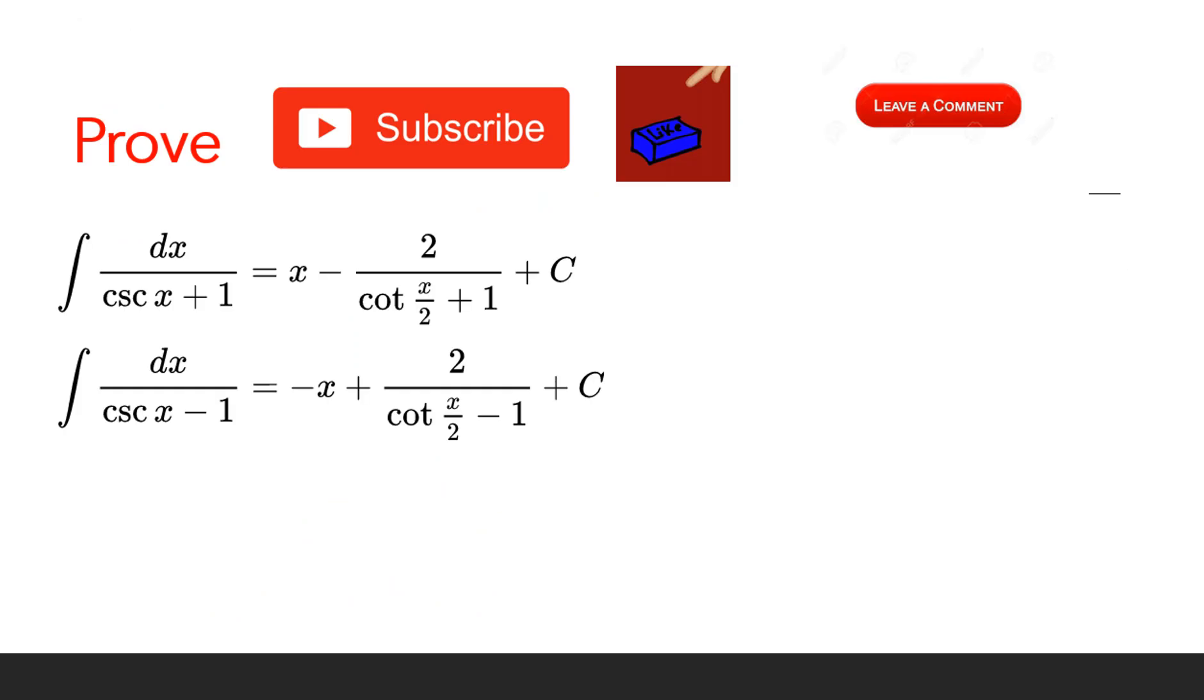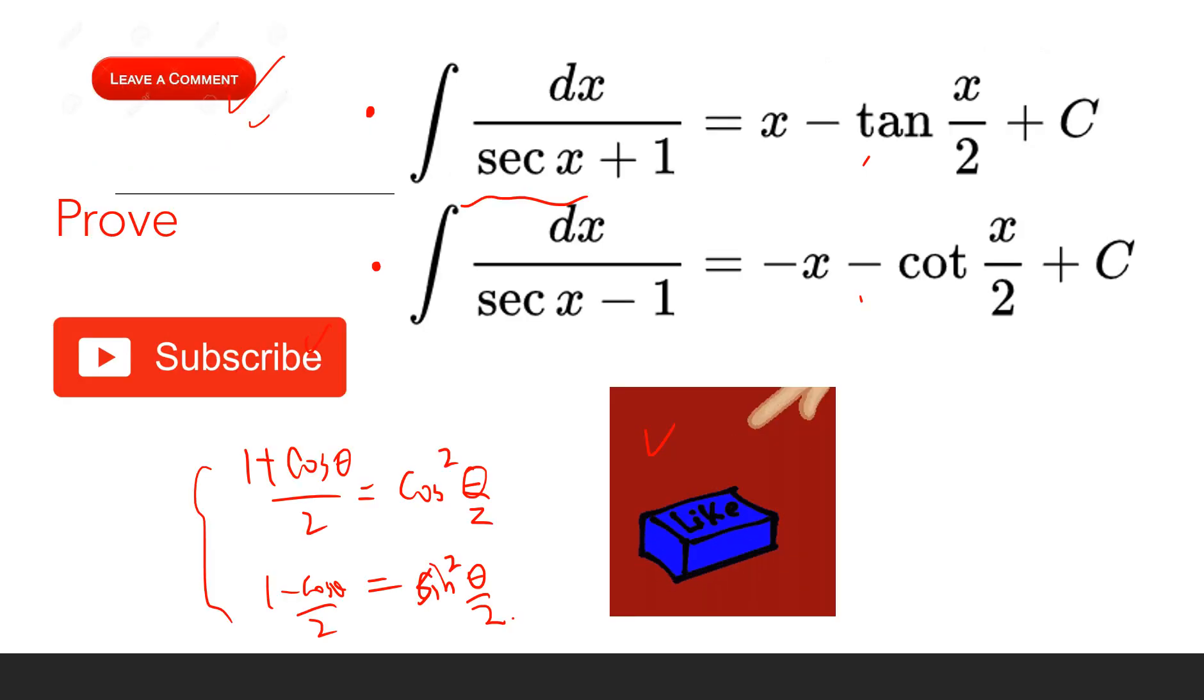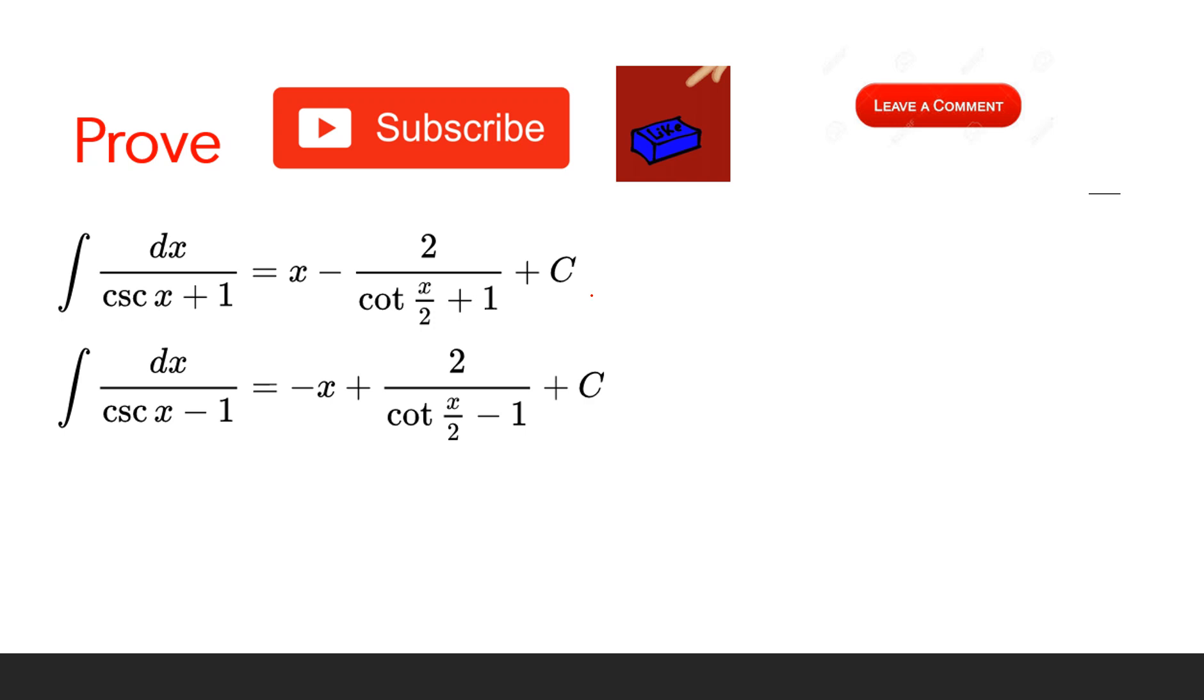But now it seems like we get 1 plus 1 over sine x, so there's no easy way to do this. But we can use a trick: let y equal π over 2 minus x.